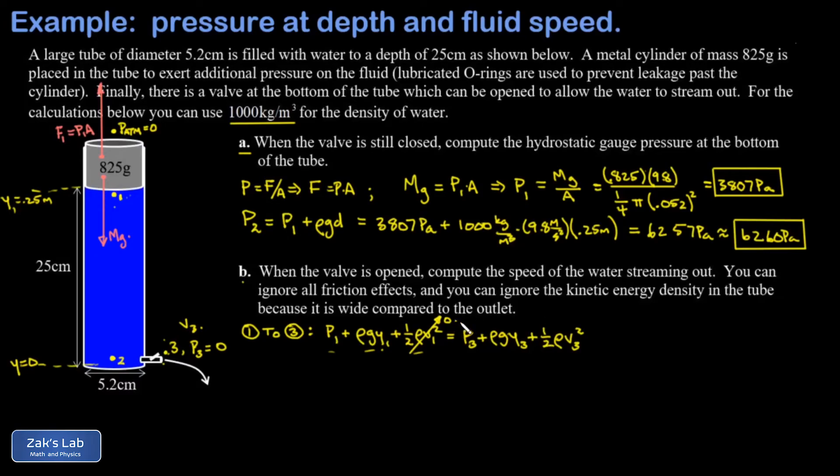What about P3? That's atmospheric pressure, which in gauge pressure units gives me zero. The gravitational potential energy density component is gone too because I set up my coordinate system so y is zero at that location. Now we just solve for v3. I multiply by two, divide by ρ, and take the square root.